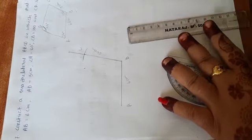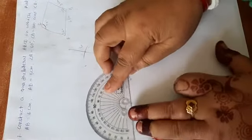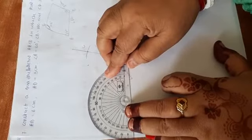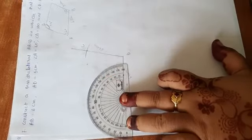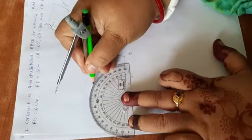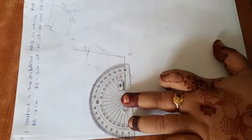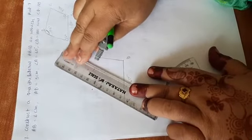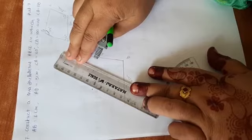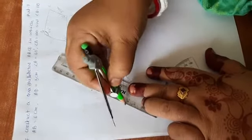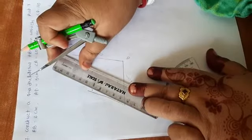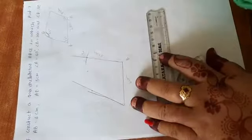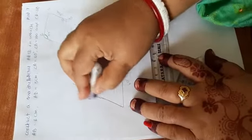Now from A point, we draw an angle by protractor. Measurement is 60 degrees. You can use compass also. This angle is 60 degrees.